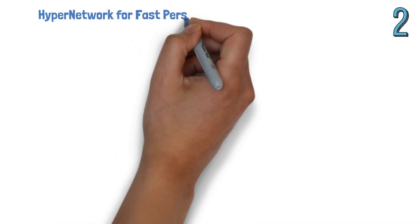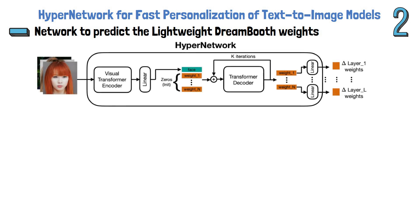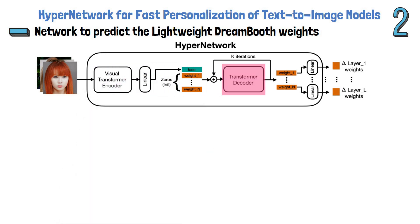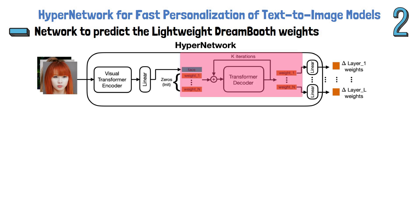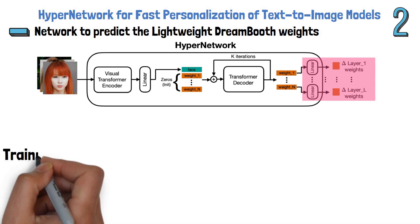The second component is the HyperNetwork for fast personalization of text-to-image models, where they train a HyperNetwork to predict all of the weights added in the lightweight DreamBooth. The architecture is described in a figure from the paper: they use a visual transformer as an encoder to encode the reference image, and a transformer decoder to produce the predicted weights. To produce the final predicted weights they do an iterative process where the encoding of the reference image is computed only once, but the predicted weights are fed back together with the image encoding to the transformer to improve them in each iteration. Finally, they use trainable linear layers to convert the decoder outputs to the layer weights.